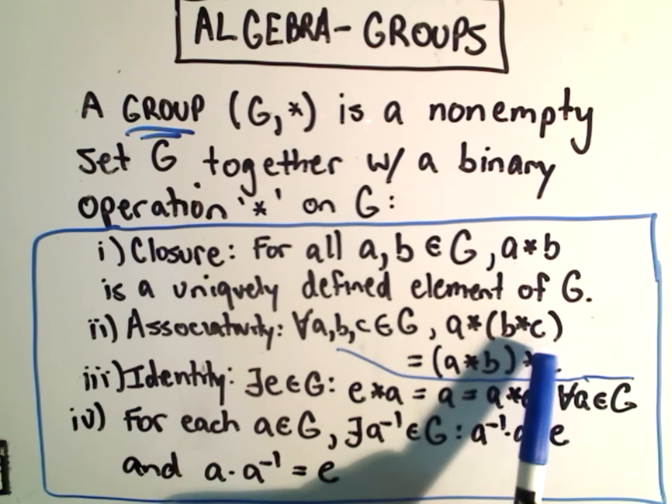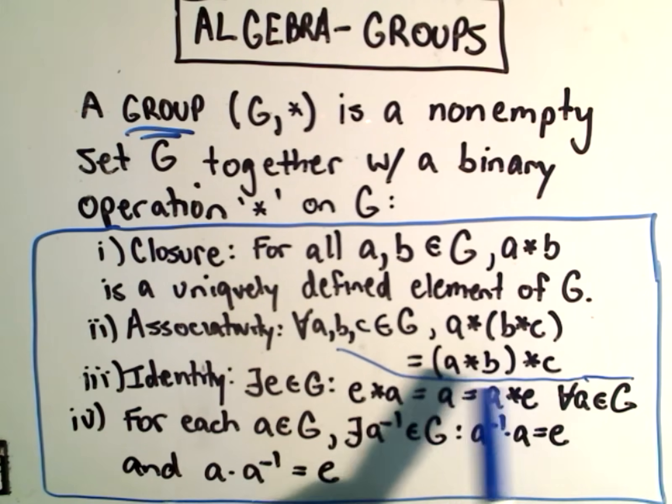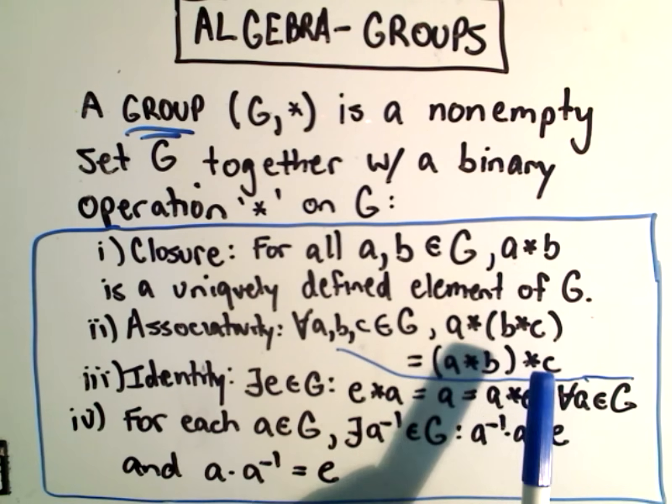Associativity says if we take B star C and then take A star that result, we'll get the same thing as if we combine A and B first and then do C.